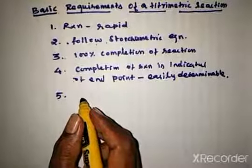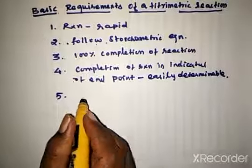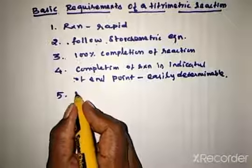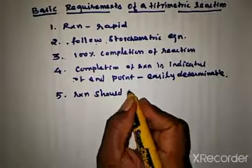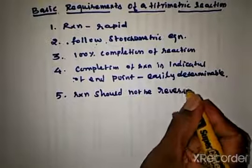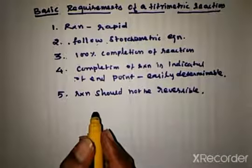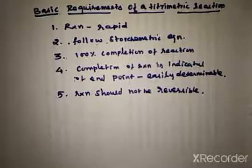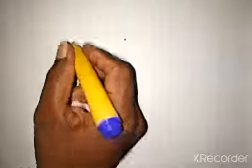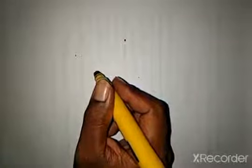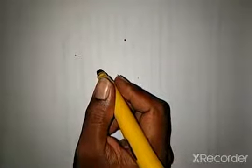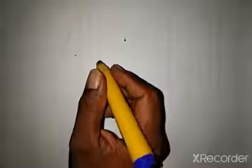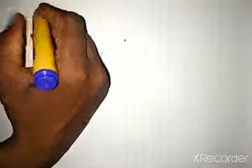Fifth, the reaction should not be reversible. If the reaction is reversible, we cannot find the exact amount of the substance present in the solution. These are the basic requirements of a titrimetric reaction. Now we shall move into the types of titrations — acid-base, redox, complexometric, iodimetric, iodometric — and discuss them one by one, starting with acid-base titration.